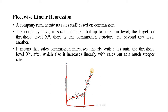Looking at the graph, this regression line has two pieces — a first piece and a second piece. The peculiarity is that the second piece is steeper than the first segment, meaning the slope coefficient will be different for each segment. A regression line with more than one slope is known as a piecewise regression model.